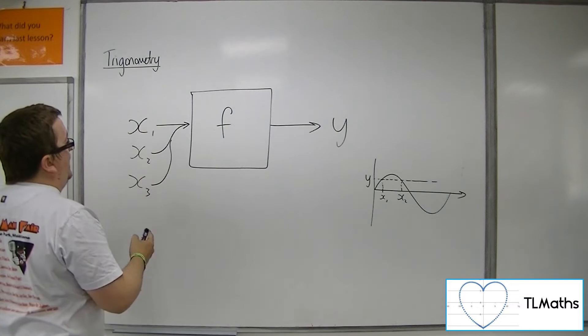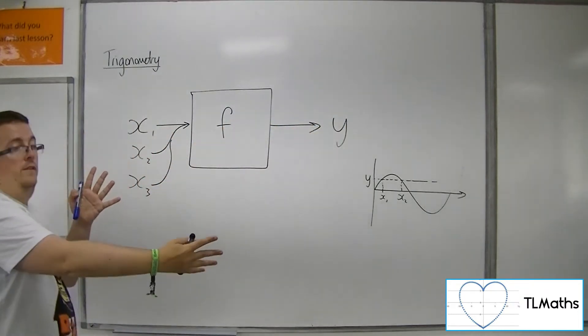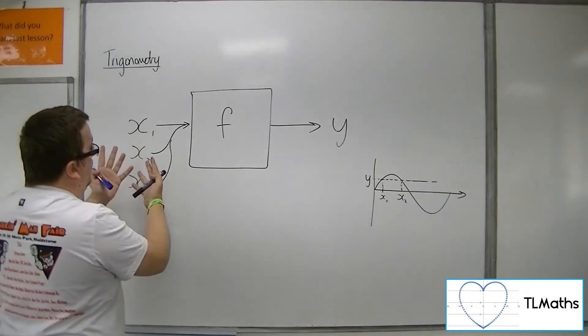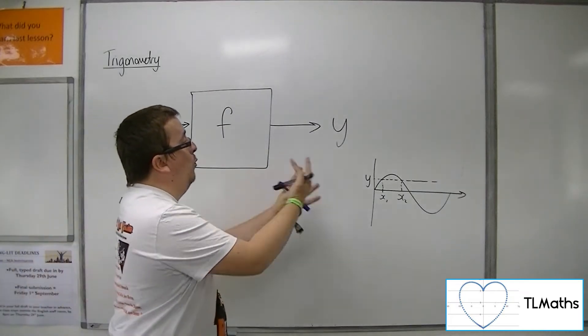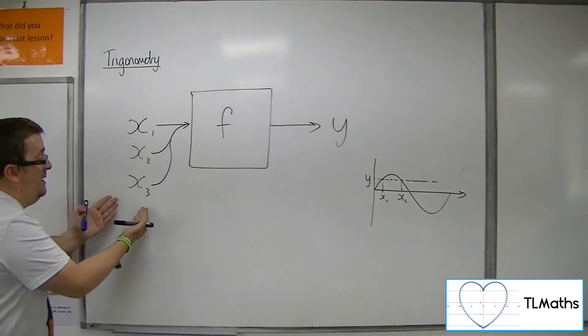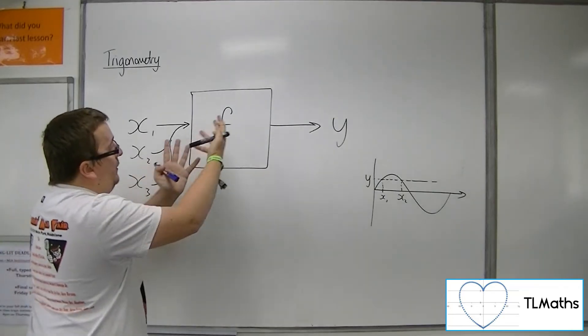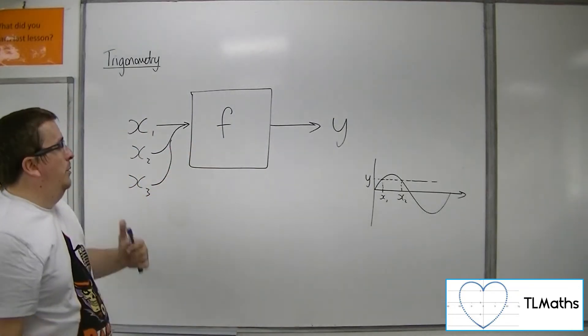These multiple values of x can give me the same value of y. This is still a function because I'm putting one input through the function and getting out one output. Although there are multiple inputs I could use to get the same output, I'm only putting one of these through to get the output.